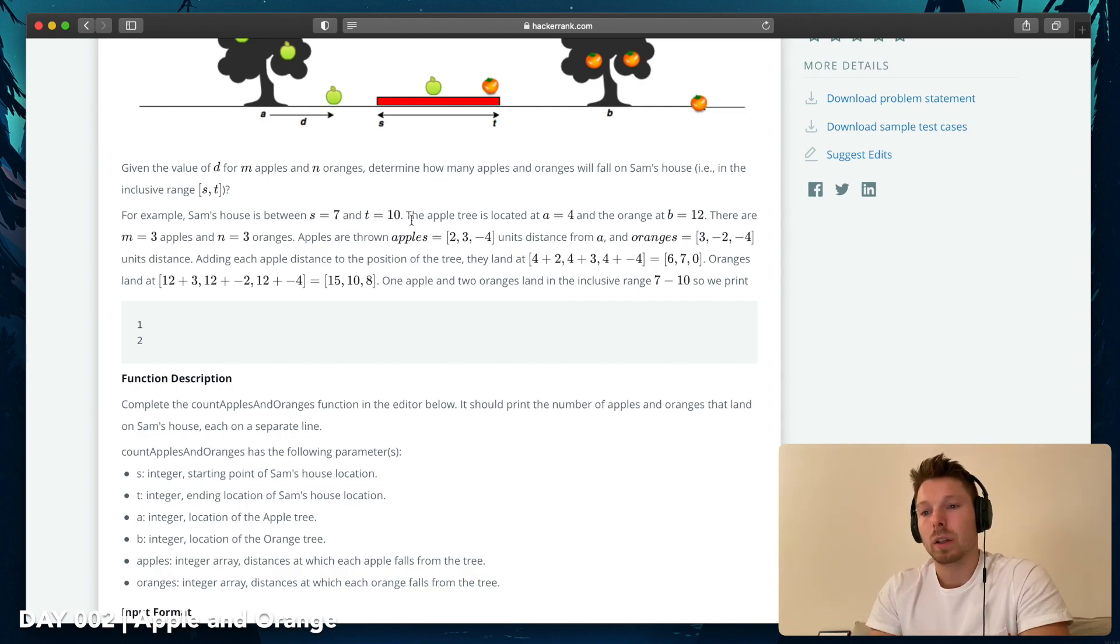So basically you want to iterate through all apples and sum the position plus the fall distance. And while we do that, we can already say, is it bigger equal seven or smaller equal ten, and then add to the count. But here, one sec, what about the oranges? Because minus two means to the left, right? Land at twelve plus minus two is ten. Okay, well that's fine.